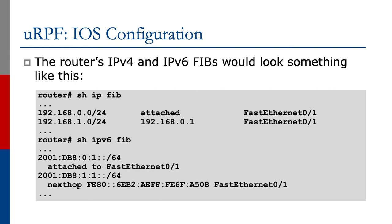When the RPF check is implemented, incoming packets with source addresses from 192.168.0.0/24 or 192.168.1.0/24 will result in a valid RPF check and the packets will be forwarded. Likewise for IPv6, any packets coming from the subnets 2001:db8:0:1::/64 or 2001:db8:1:1::/64 will pass the RPF check and be forwarded.